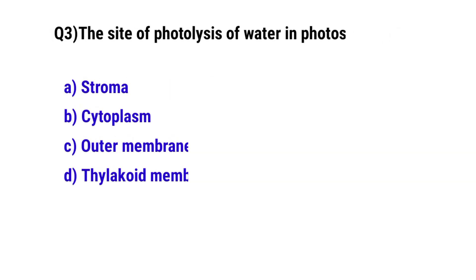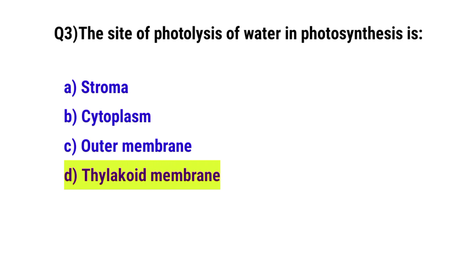Question No. 3: The site of electrolysis of water in photosynthesis is. The correct option is D: Thylakoid membrane.